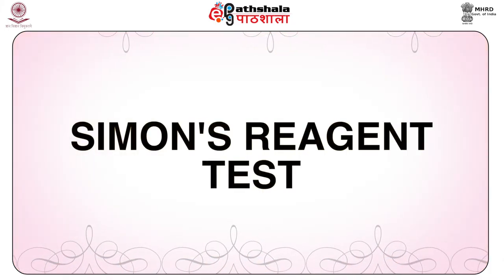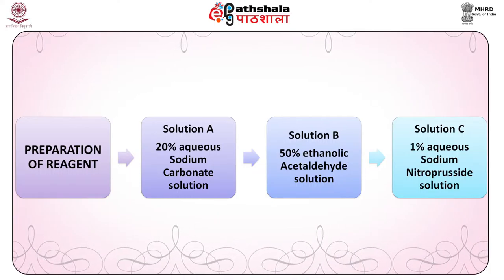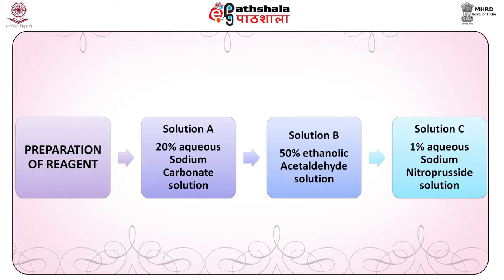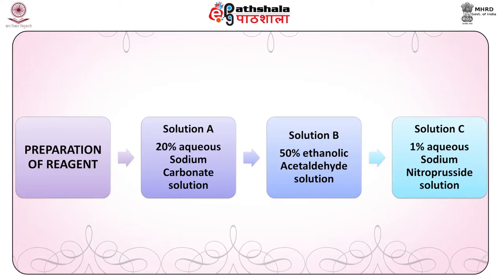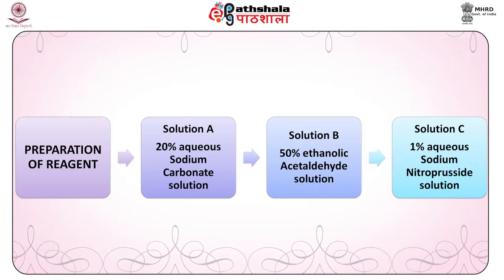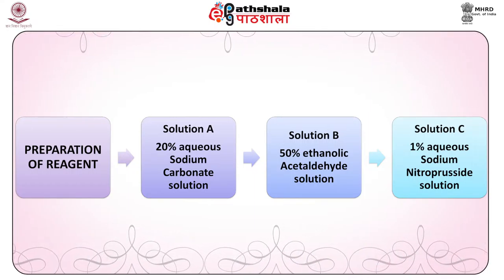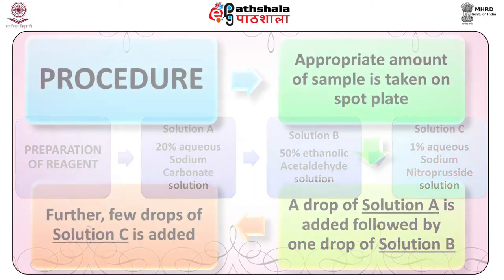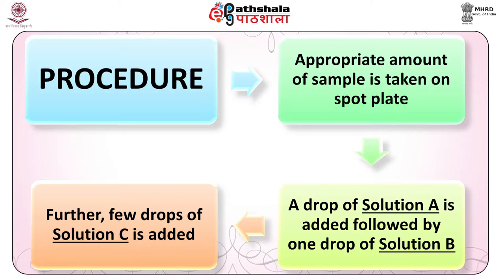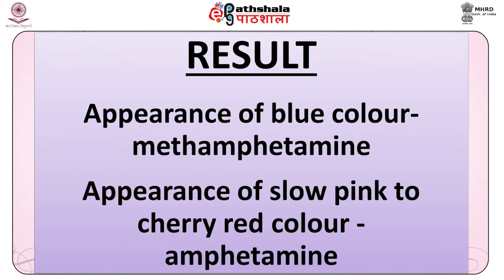Simon's reagent test. Solution A: 20% aqueous sodium carbonate solution. Solution B: 50% ethanolic acetaldehyde solution. Solution C: 1% aqueous sodium nitroprusside solution. Procedure: appropriate amount of sample is taken on a spot plate; a drop of solution A is added followed by one drop of solution B, then a few drops of solution C. Result: appearance of blue color indicates a positive test for methamphetamine, while appearance of slow pink to cherry red color indicates the presence of amphetamine.